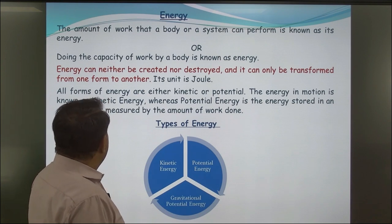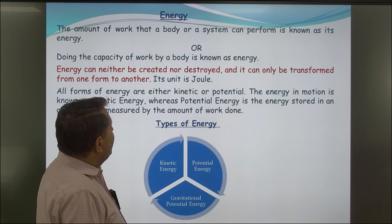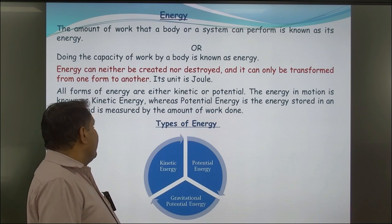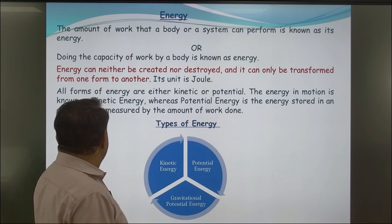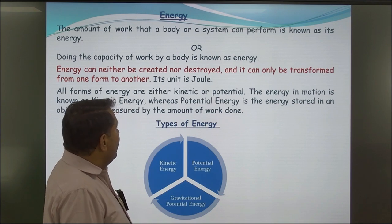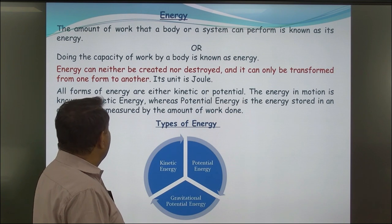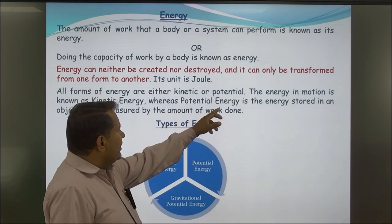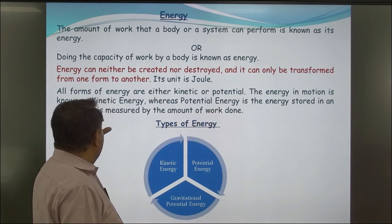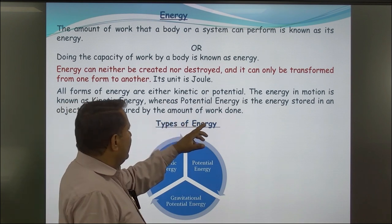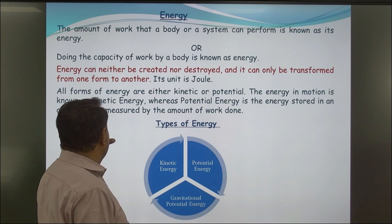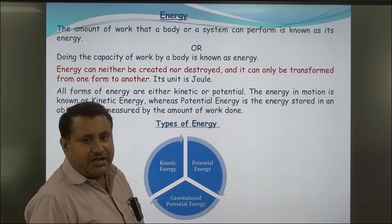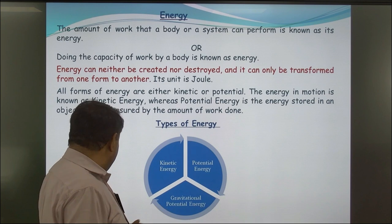What is Energy? The amount of work that a body or a system can perform is known as its energy. In other words, the capacity of doing work by a body is known as energy. Energy can neither be created nor destroyed; it can only be transformed from one form to another. Its unit is joule. All forms of energy are either kinetic or potential. Energy in motion is known as kinetic energy, whereas potential energy is the energy stored in an object, measured by the amount of work done. There are three types of energy: kinetic energy, potential energy, and gravitational potential energy.